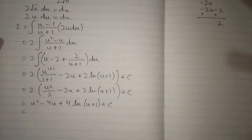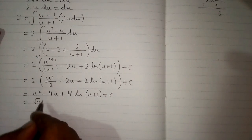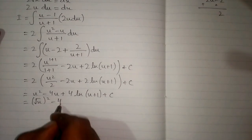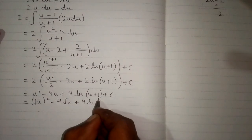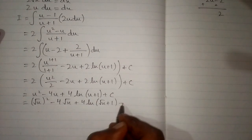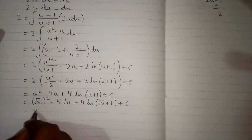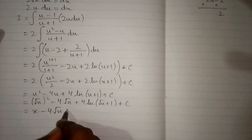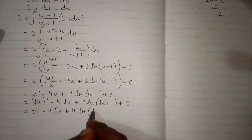Then we put the value of u, which is square root of x. So we have square of square root of x minus 4 times square root of x plus 4 times ln of square root of x plus 1, plus c. The final answer is x minus 4 times square root of x plus 4 times ln of square root of x plus 1, plus c.